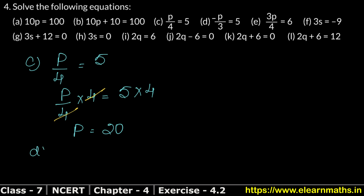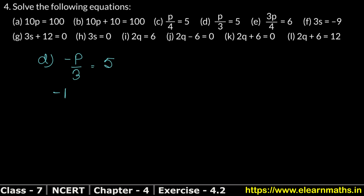Part D is: minus p divided by 3 equals 5. Since 3 is dividing, we multiply both sides by 3. We multiply minus p upon 3 by 3. The 3s cancel because 3 is in the denominator. So minus p equals 15, since 5 times 3 is 15.